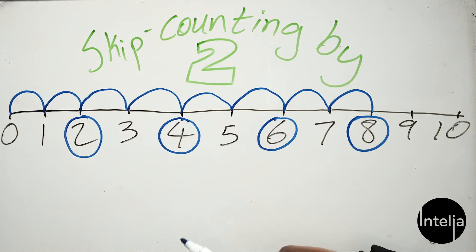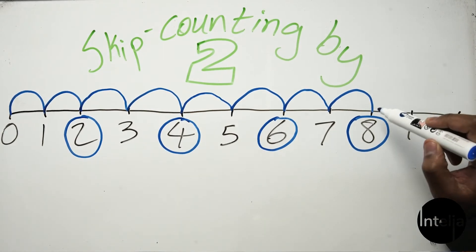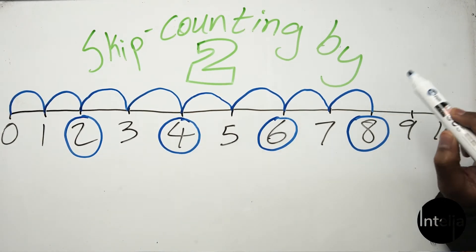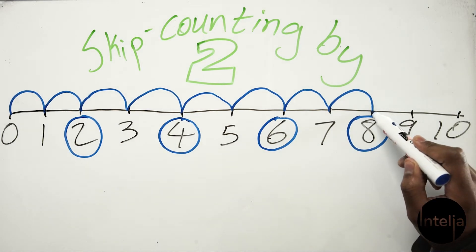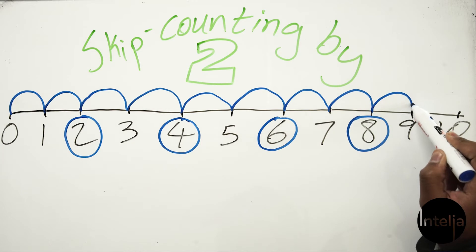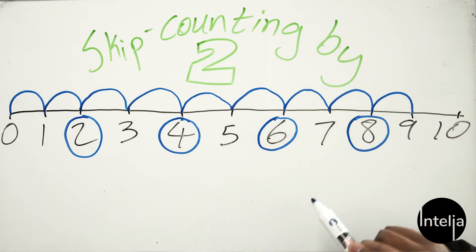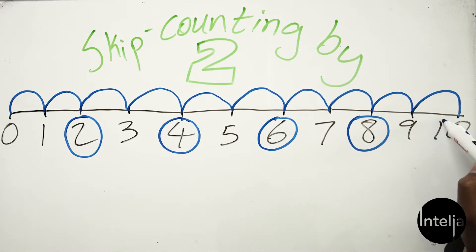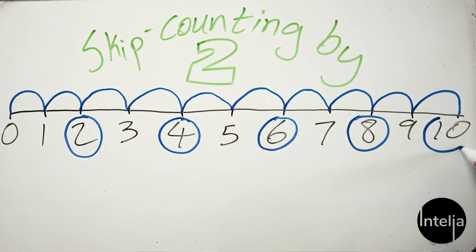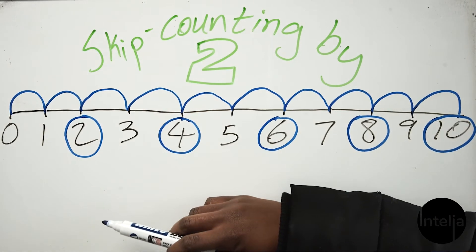Eight! Well done, friends. Now one last time, starting from the number eight, you skip two times — one and two — and what number do you land on now? It's ten! Well done.